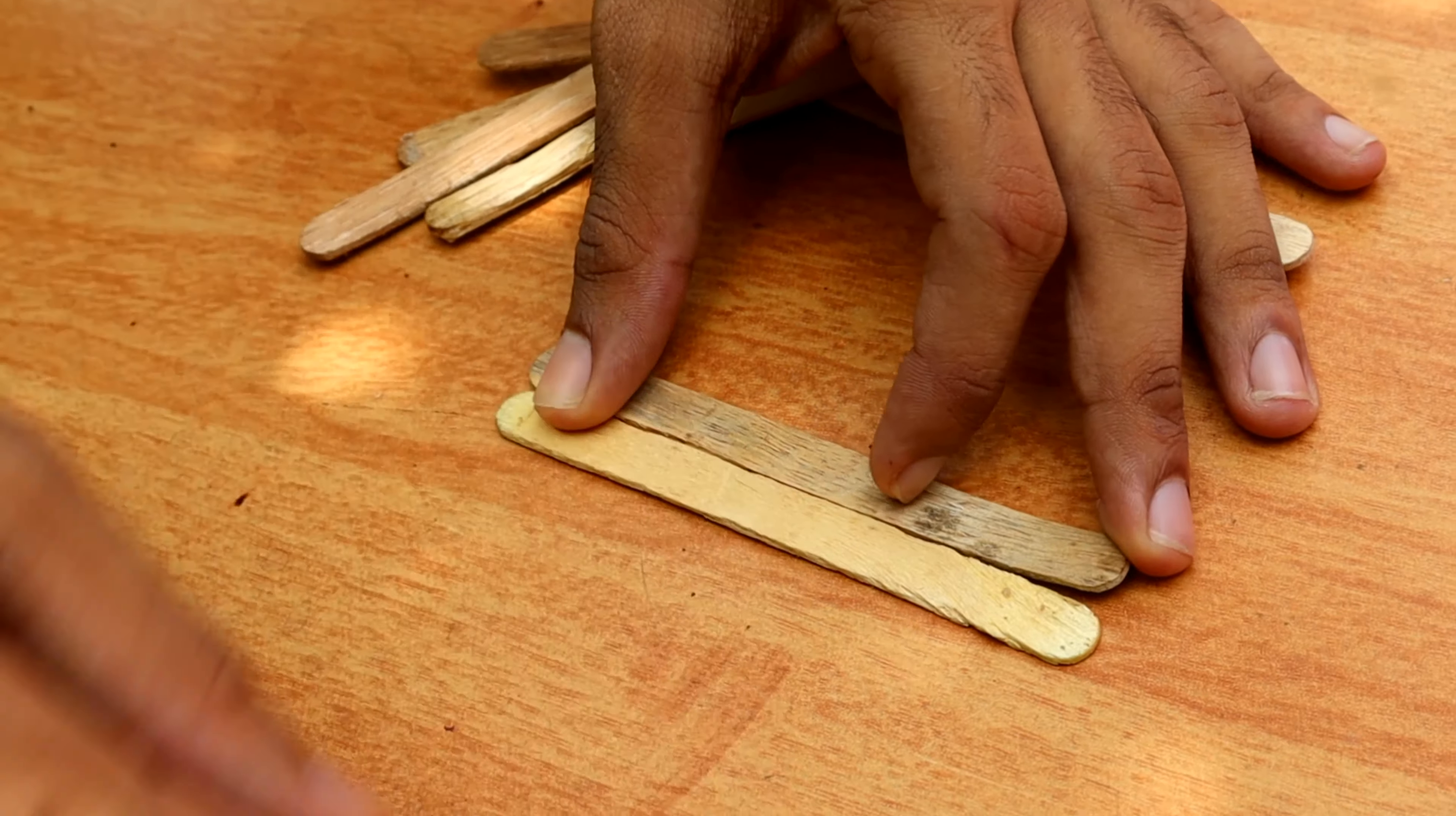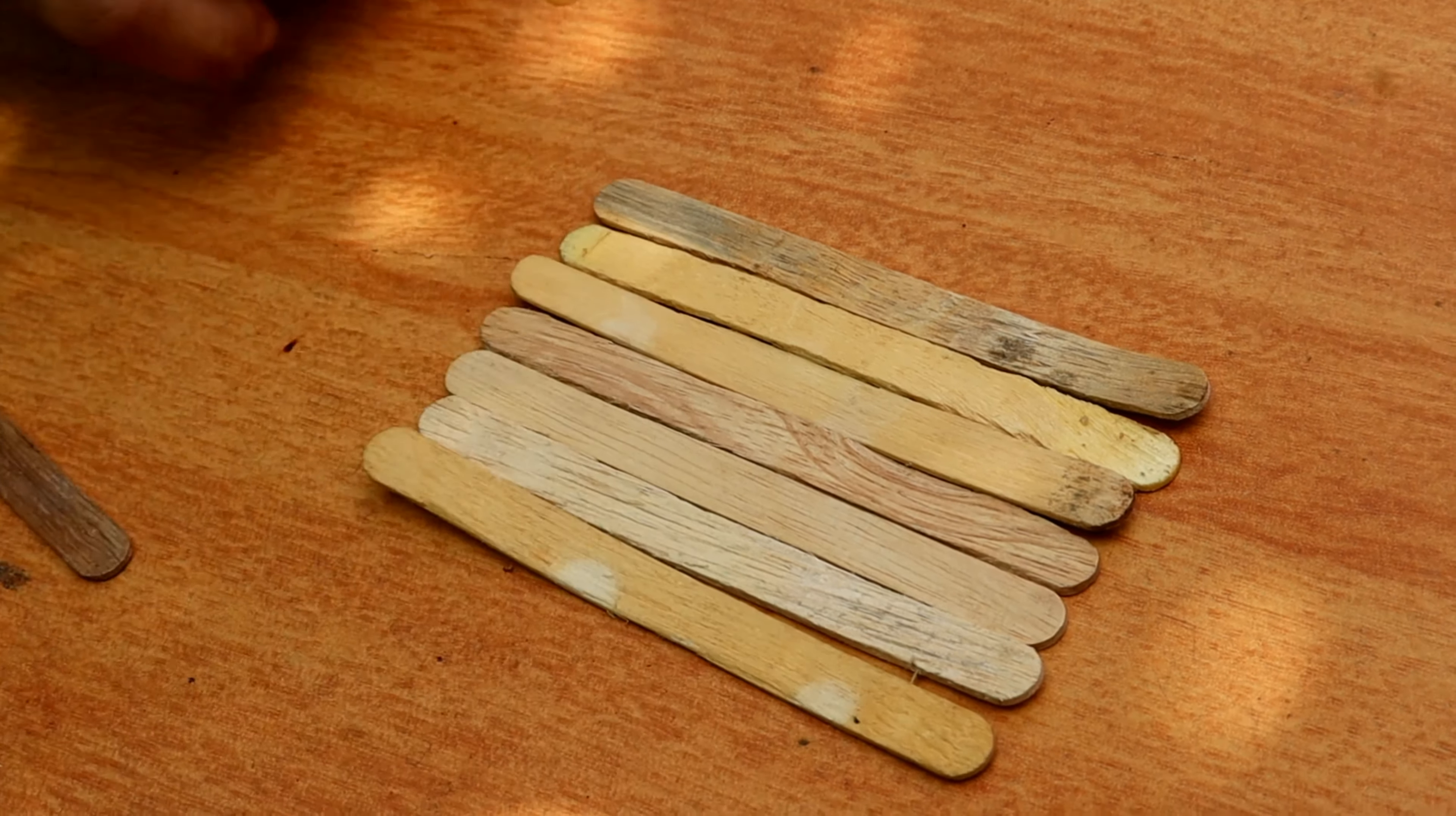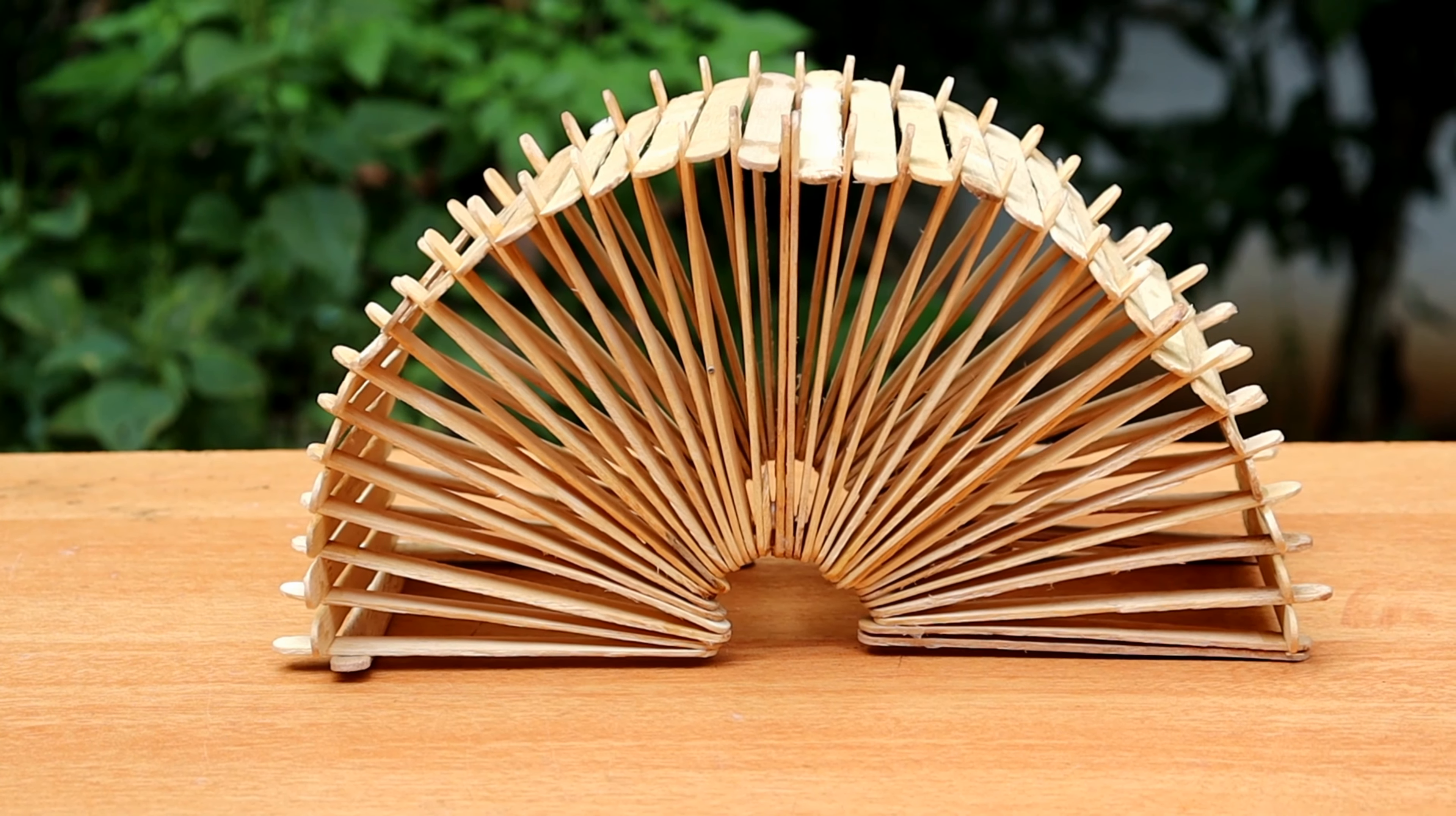We have ice cream sticks with a base. We have to join all of them. We put ice cream sticks on two sides to create the base. We put the base on the top of the lamp.